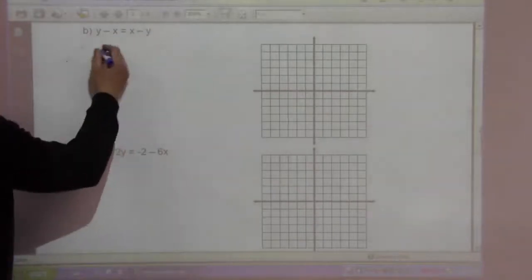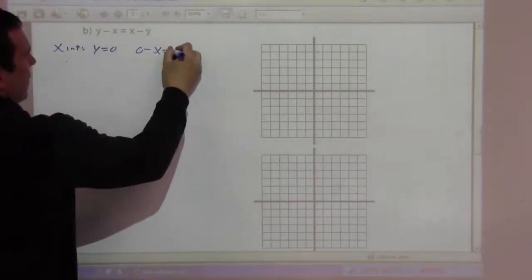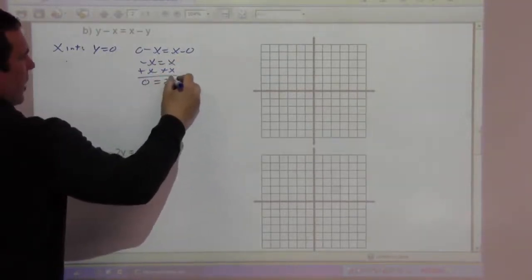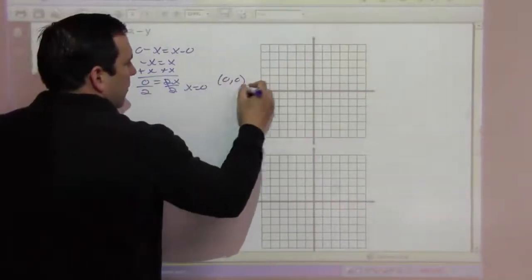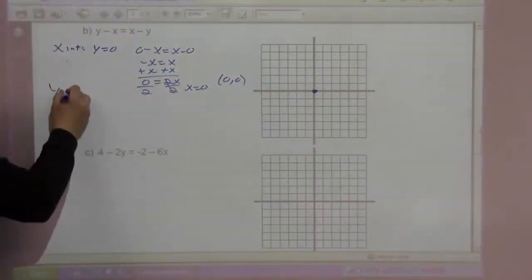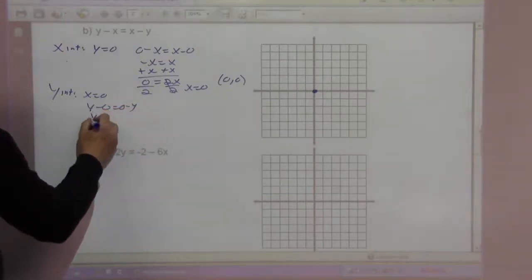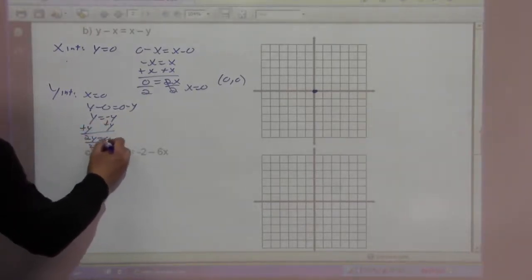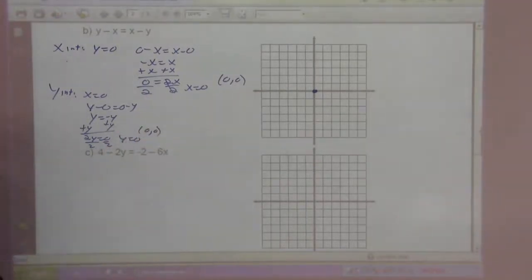We have y minus x equals x minus y. For the x-intercept, y equals 0, so 0 minus x equals x minus 0. Negative x equals x, so 0 equals 2x, and x equals 0. For the y-intercept, x equals 0, so y minus 0 equals 0 minus y. Y equals negative y, so 2y equals 0 and y equals 0. Same point, 0, 0. Doing the intercepts, we only got one point, so we need to graph some other points.